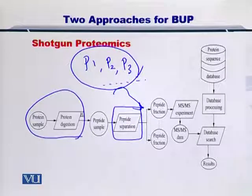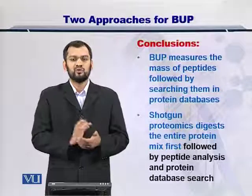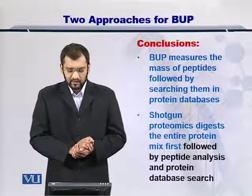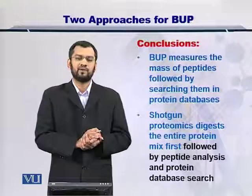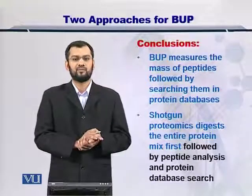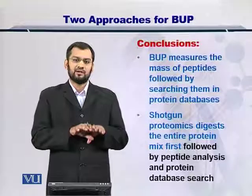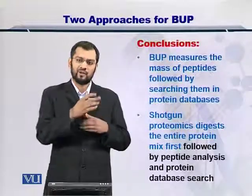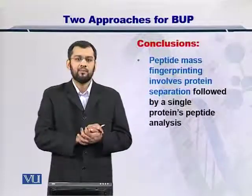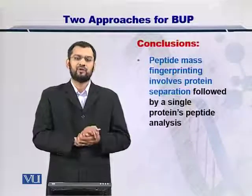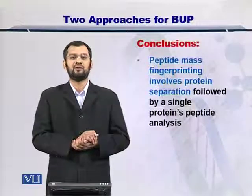Once you have obtained the peptides and measured them, you can search for the precursor protein in the sample. To conclude, the bottom-up proteomics method measures the peptides resulting from the precursor protein. There are two approaches: the shotgun proteomics approach, which digests the entire protein mix into peptides for measurement by mass spectrometer, and the peptide mass fingerprinting approach, in which you first separate the proteins and then digest each protein into its peptides for onward search using the sequence database.